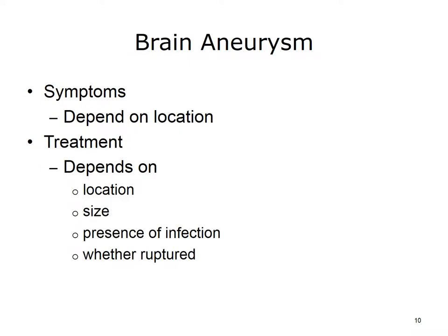Another brain disorder involves an abnormal bulge or ballooning in the wall of an artery in the brain, called a brain aneurysm. Most brain aneurysms produce no symptoms until they become large and begin to leak blood or rupture. Symptoms may depend on where in the brain the aneurysm is located, and could include a droopy eyelid, double vision or other changes in vision, pain above or behind the eye, a dilated pupil, and numbness or weakness on one side of the face or body. Treatment depends on the size and location of the aneurysm, if infection is present, or whether it has ruptured or not.